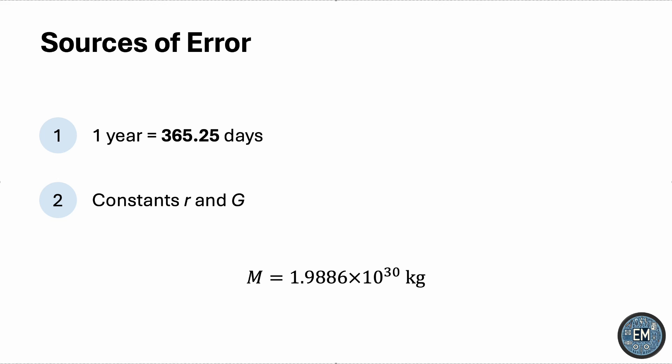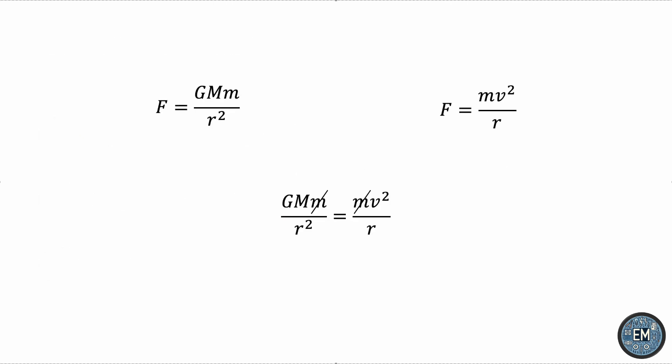Remember how in the beginning of the video we assumed the orbit to be circular? Well, it's not exactly a circle, it's more of an ellipse. This naturally introduces some error to our approximation, but there doesn't seem to be too much we can do about it because our whole method relies on equating the gravitational force to the centripetal one, which necessitates that the motion is circular.